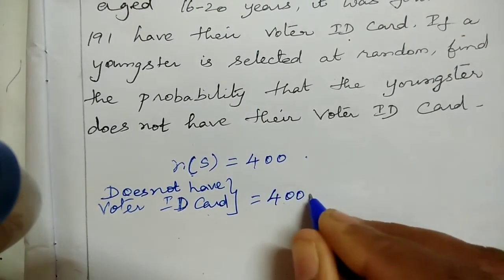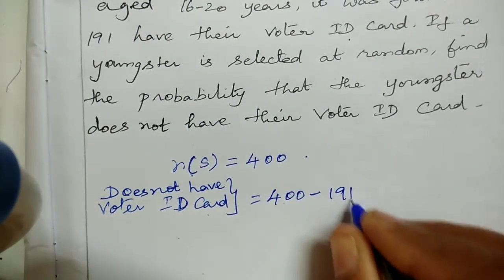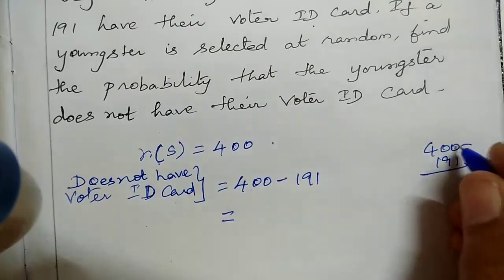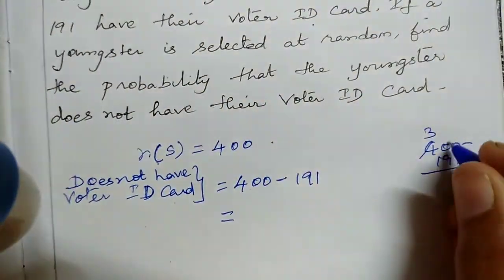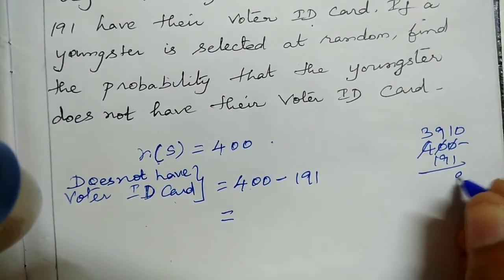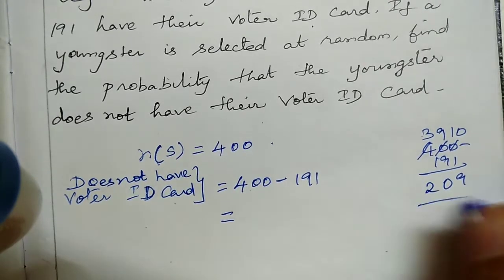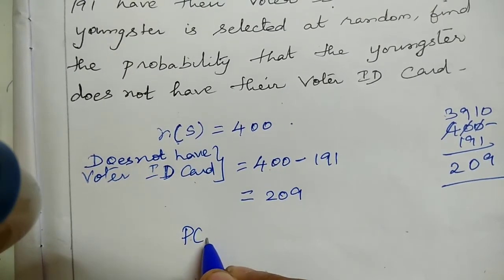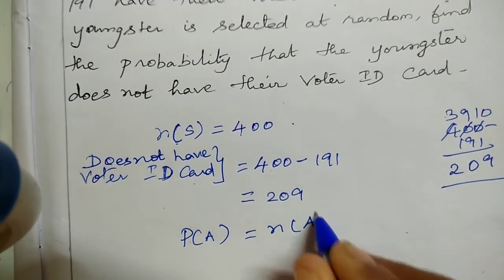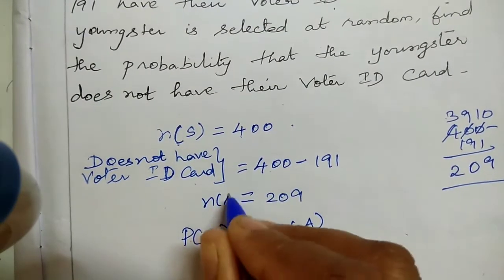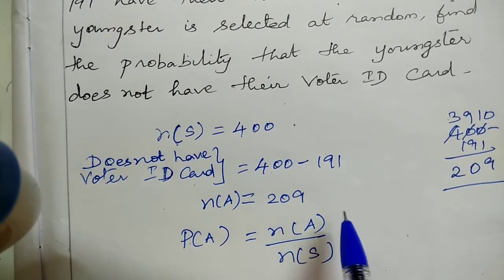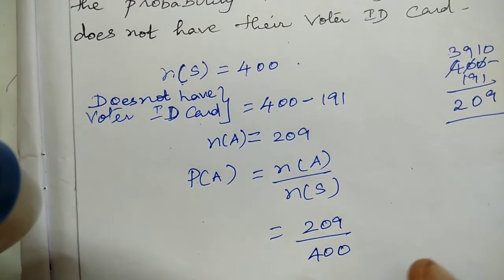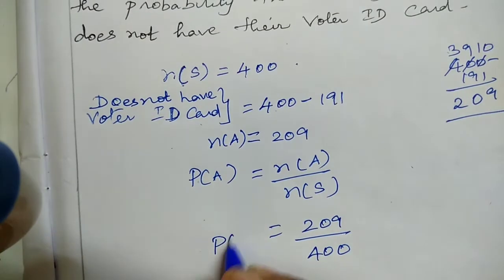P of A is equal to N of A by N of S. N of A is 209 — since 400 minus 191 equals 209. So the answer is 209 by 400.